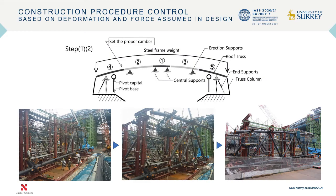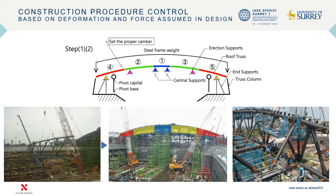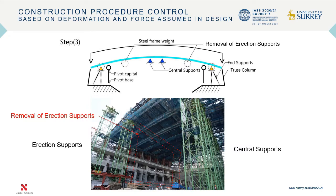I would like to explain the seven steps of the construction procedure. Step 1: The roof trusses were divided into five blocks and each block was assembled and placed on the ground. Step 2: The construction canopy is established by properly assembling the five prefabricated blocks. Step 3: After welding the five blocks, erection supports were removed.